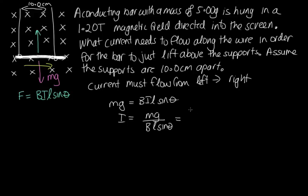So now the mass is 5 grams. So that's 5.00 times 10 to the minus 3. G, that's the acceleration due to gravity, 9.80. B, that's the strength of the magnetic field, so 1.20.